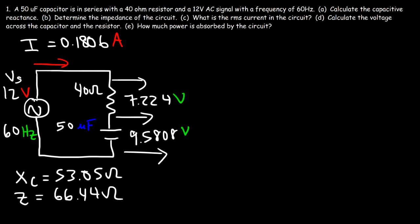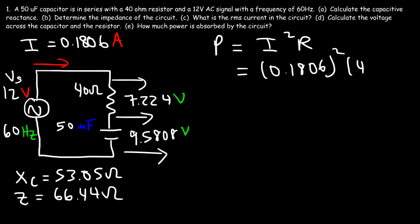Part E: how much power is absorbed by the circuit? The resistor absorbs energy permanently, while the capacitor absorbs and releases energy as the AC signal reverses direction — so there's no net energy transfer from the capacitor. The net power consumed is the power consumed by the resistor: P equals I squared times R, which is 0.1806 squared times 40 ohms, giving 1.305 watts.